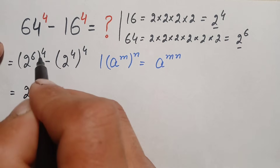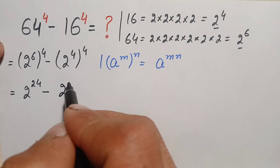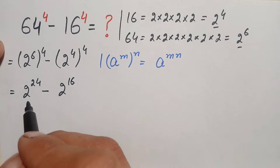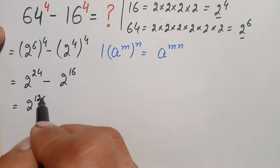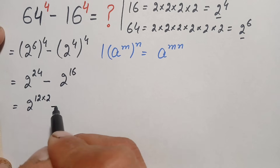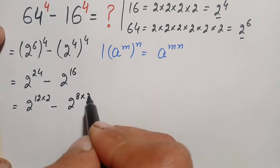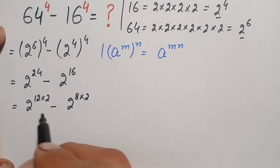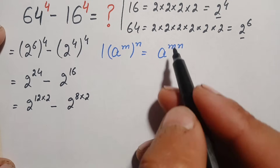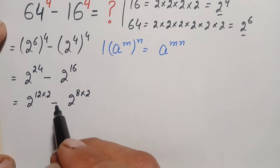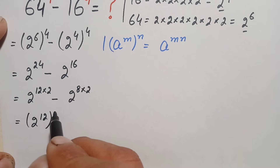Using this identity, the first term becomes 2 raised to power 6 times 4, which is 2 raised to power 24, and the second term becomes 2 raised to power 4 times 4, which is 2 raised to power 16. We can then rewrite 2 raised to power 24 as (2 raised to power 12) whole raised to power 2, and 2 raised to power 16 as (2 raised to power 8) whole raised to power 2.